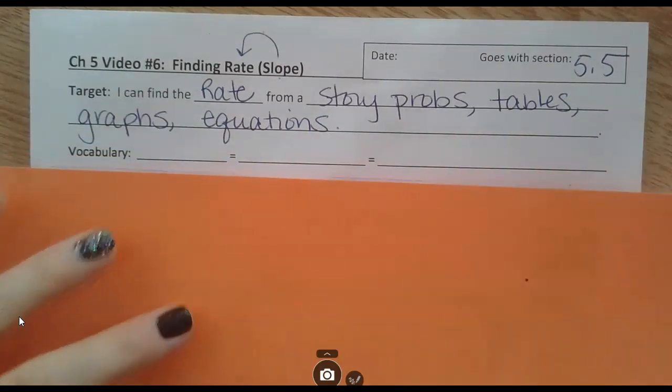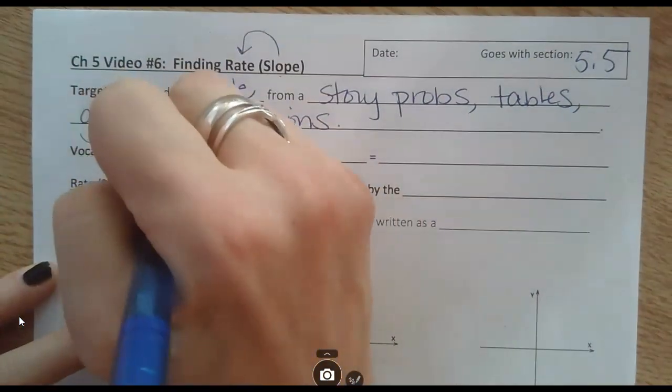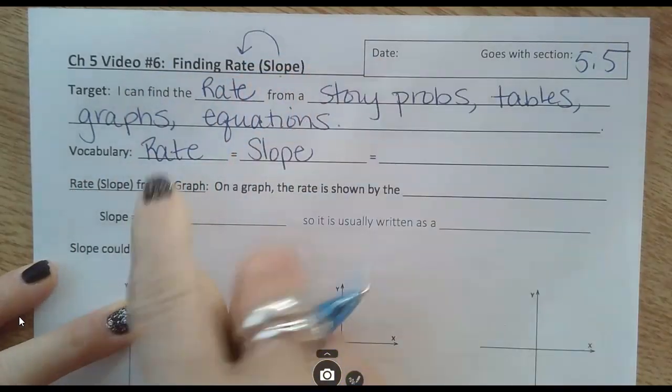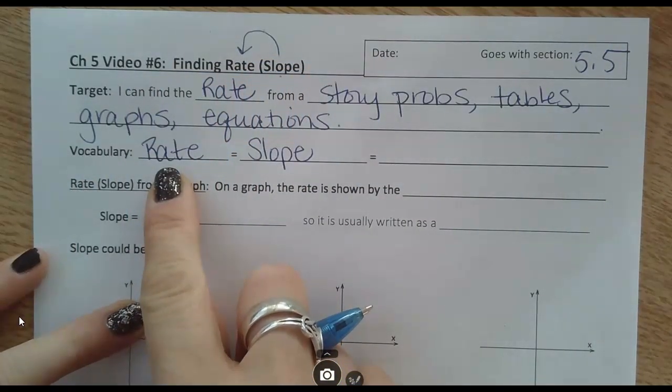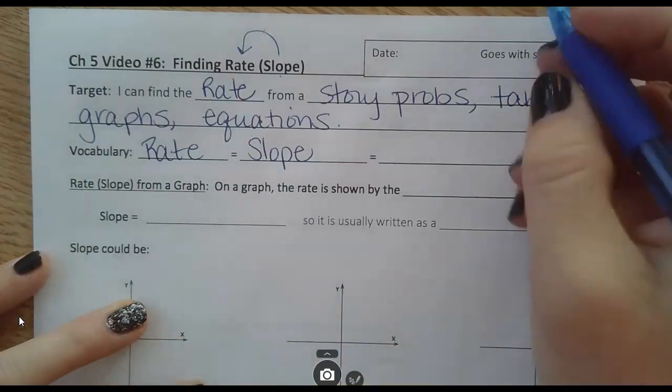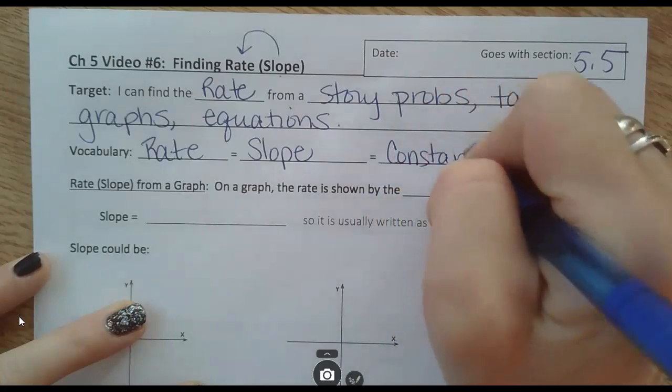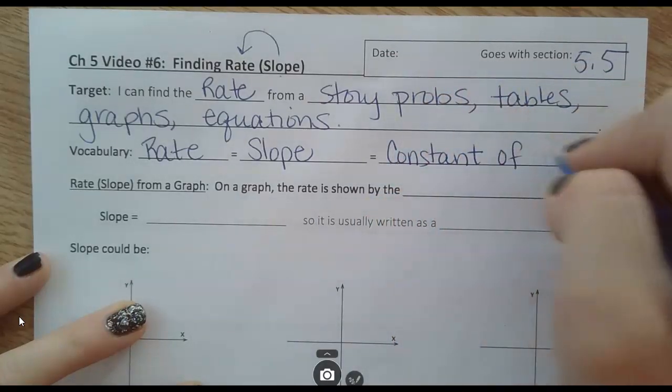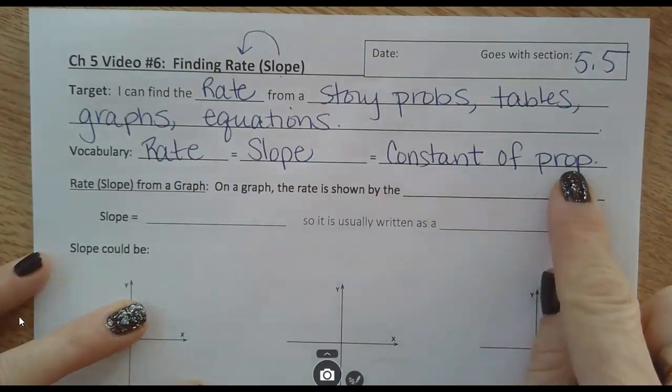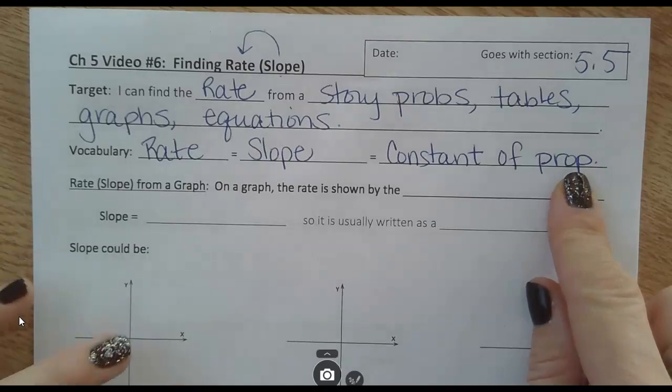Some vocab - the rate is just the same thing as slope. We've already talked about rate a lot in chapter five already. But another name for it that you'll see in this section is the constant of proportionality. So just a longer way of really saying the rate.